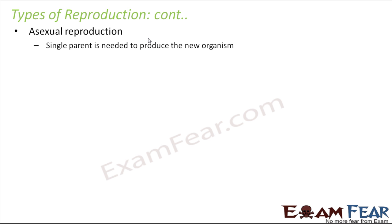In asexual reproduction, only a single parent is needed — you just need one parent. Compare this with human beings, where for a child to be born you need a father as well as a mother. That is an example of sexual reproduction. But in asexual reproduction, just one organism is needed — there is no concept of mother or father. No sexual intercourse is involved, meaning there is no communication between a male and a female. Every organism is capable of reproducing on its own.